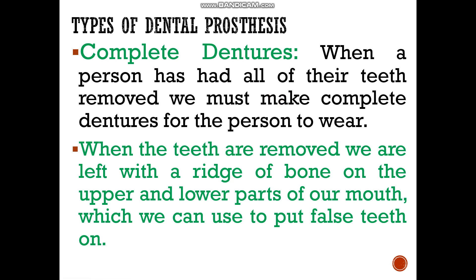We are studying two types of dental prostheses: complete dentures and partial dentures. Complete dentures are made when a person has had all of their teeth removed. When the teeth are removed, we are left with a ridge of bone in the upper and lower parts of the mouth, which we use to place the false teeth or dentures.